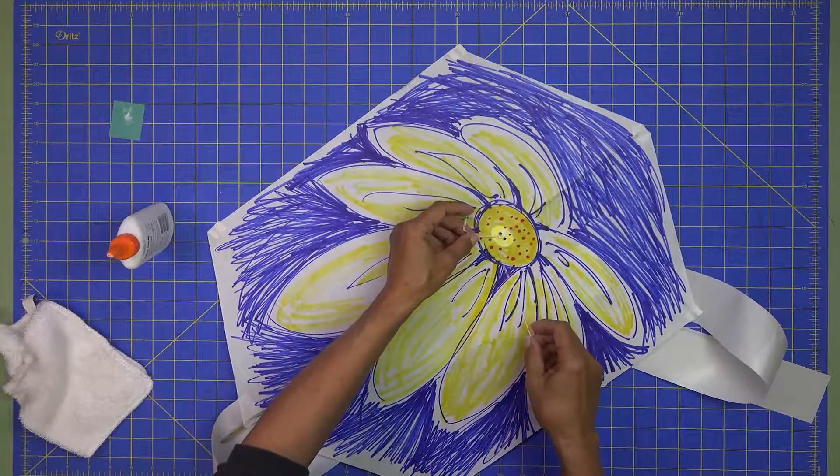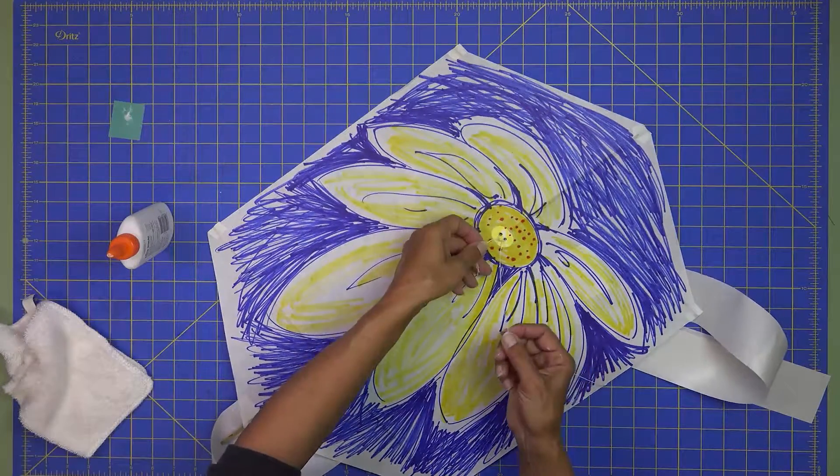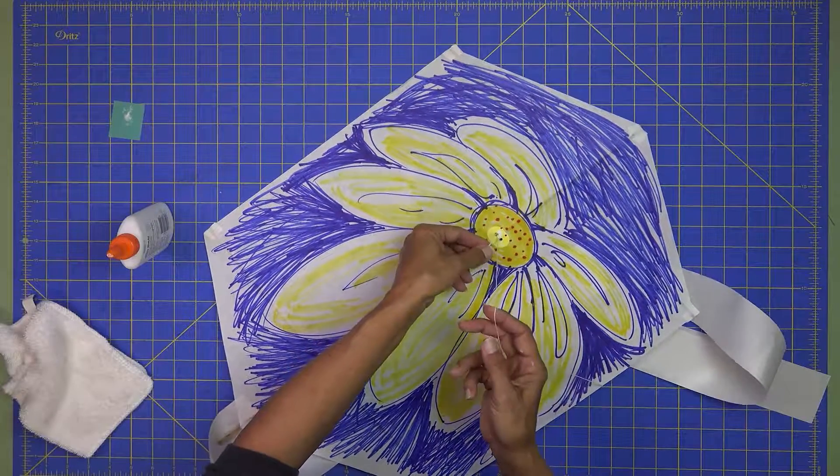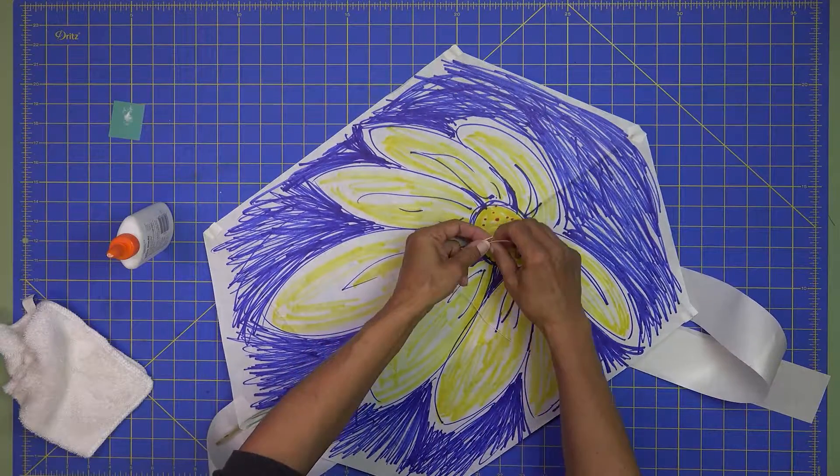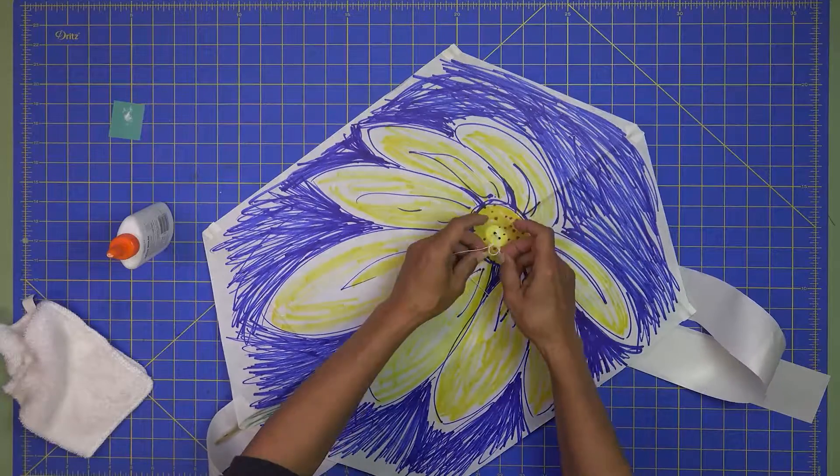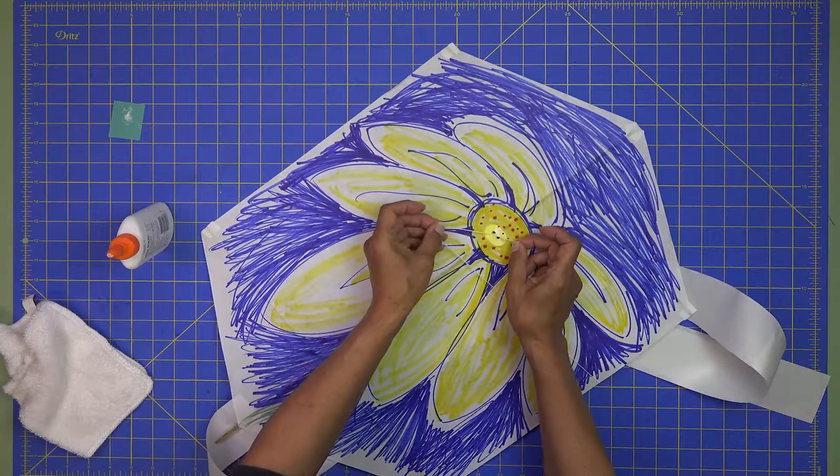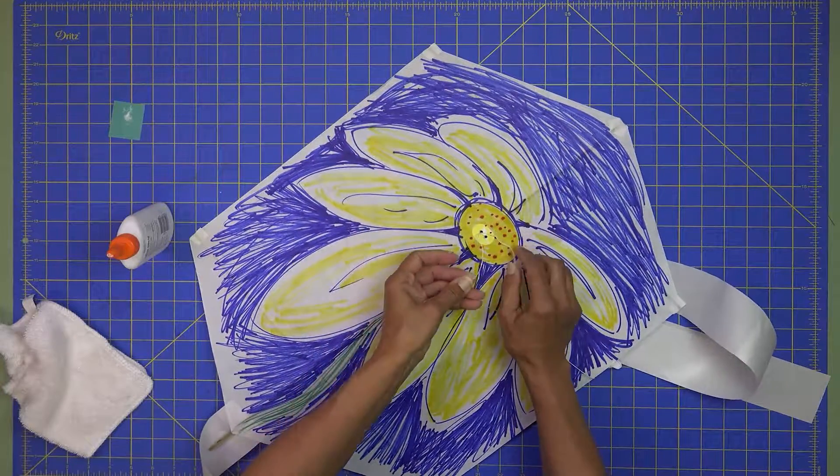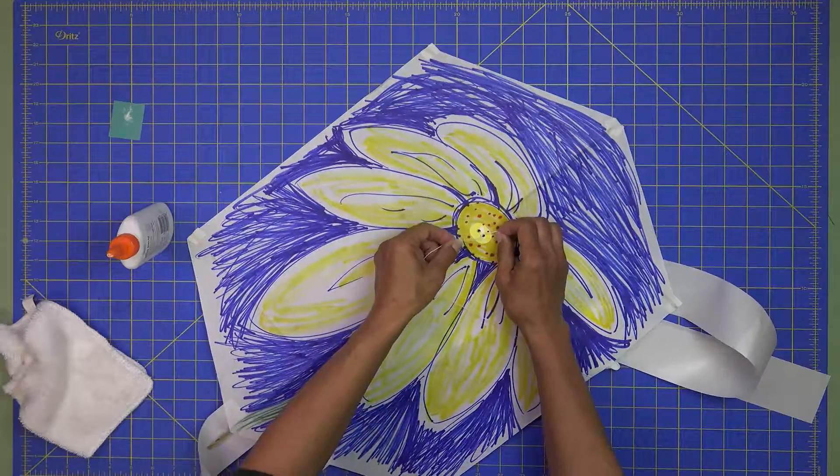We have one overhand knot and then one more. So we'll just pull that nice and snug. We'll do one more overhand knot like that. Pull it snug. And that's it. We'll just center that up a little bit.